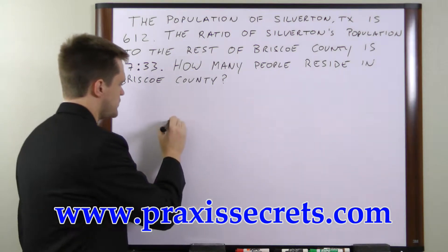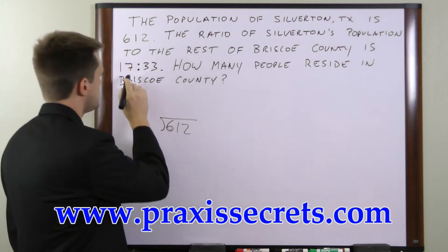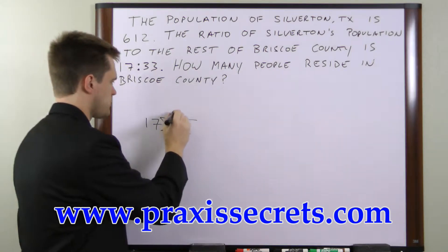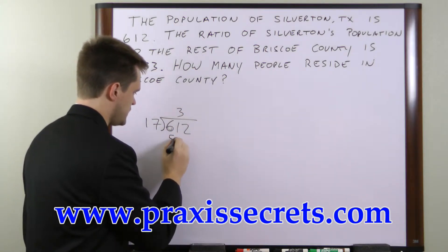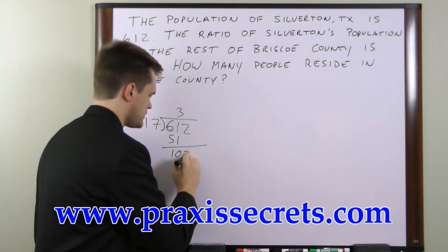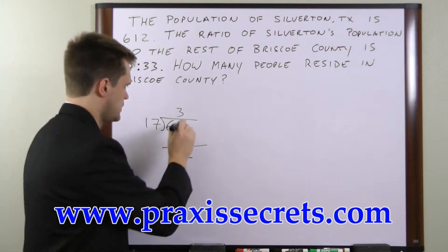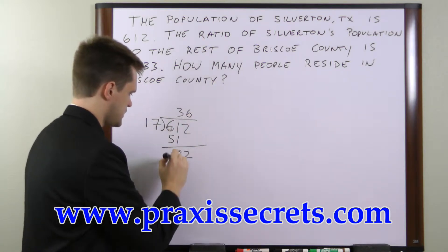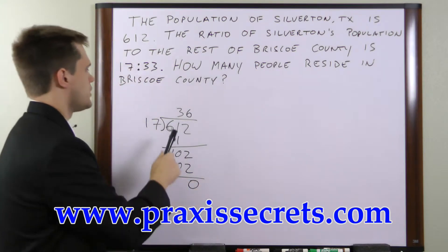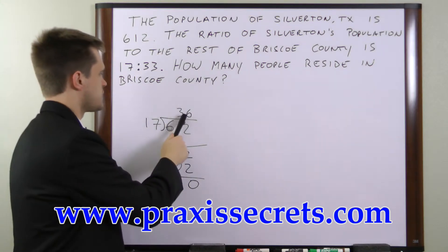We have 612 people in the town and we're going to divide by 17. 17 goes into 61 three times. 3 times 17 is 51, so that leaves us with 10. We bring down the 2, and 17 goes into 102 six times. 6 times 17 is conveniently 102. So each number in the ratio represents 36 people.